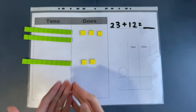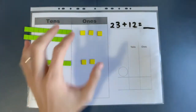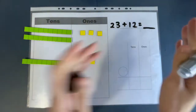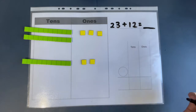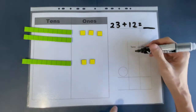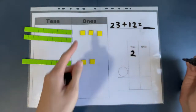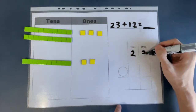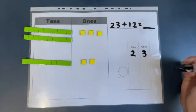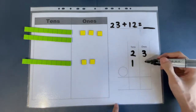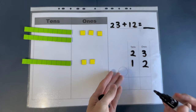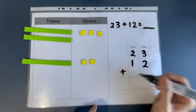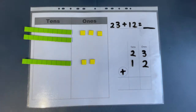23 plus 12. Now let's copy this over here into this smaller one. This and this are exactly the same, except that this is in blocks and this is in numbers. So how many tens? Two tens here. How many ones here? Three ones. How many tens here? One ten. How many ones here? Two. And what are we supposed to do here in this circle? We are supposed to write plus. Plus means put together.